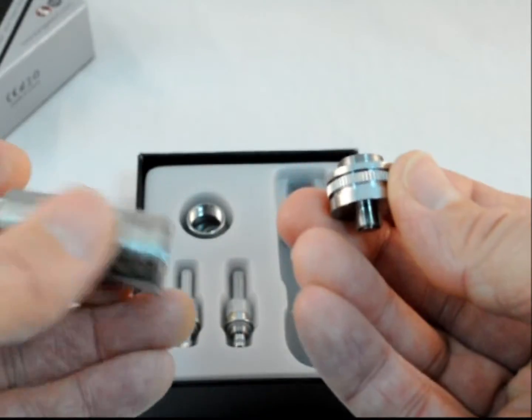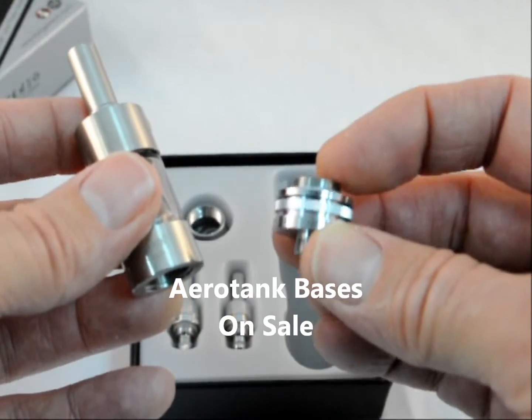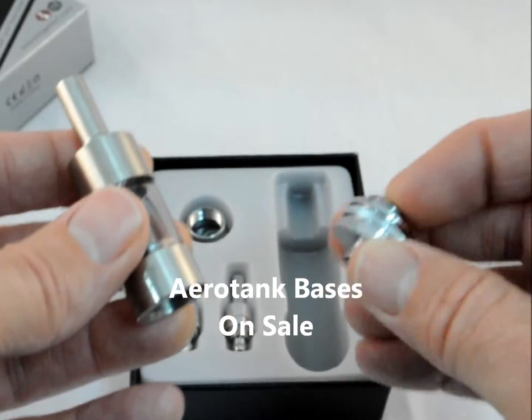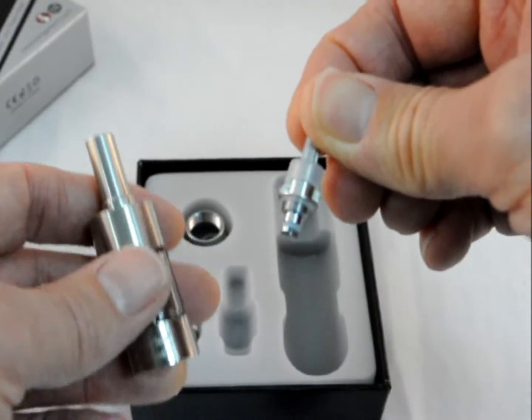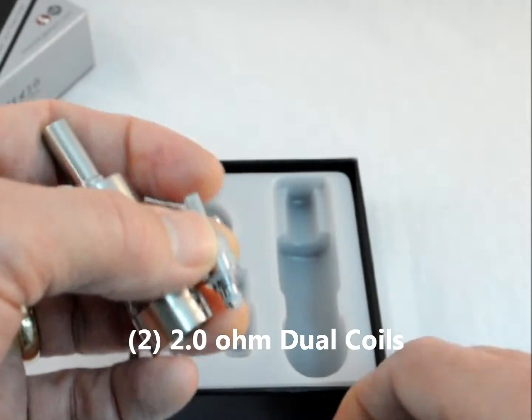The base comes off. And these also are on sale as a standalone option. You can attach these to a ProTank 2, ProTank 3. And the Aerotank comes with two dual coil 2.0 ohm replacements.